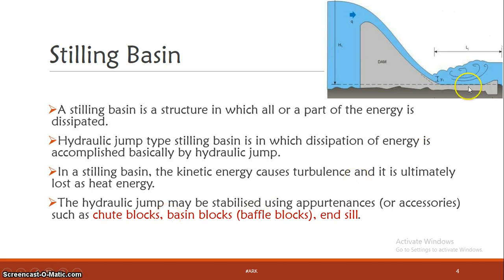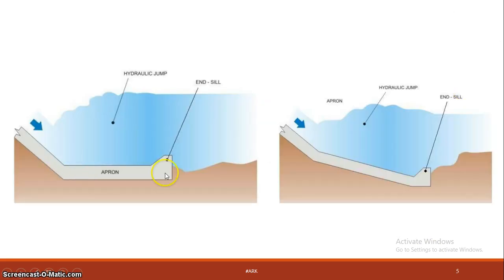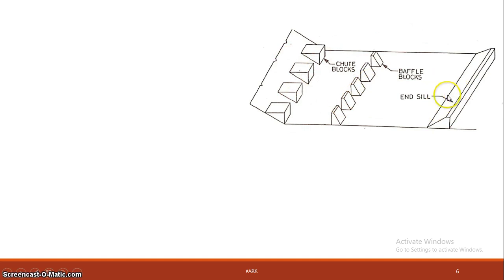The stilling basin can be classified based on its floor type: horizontal floor and sloping floor. The stilling basin includes different accessories — first, chute blocks at the entrance, then baffle walls in the middle, and finally end sills at the downstream end.